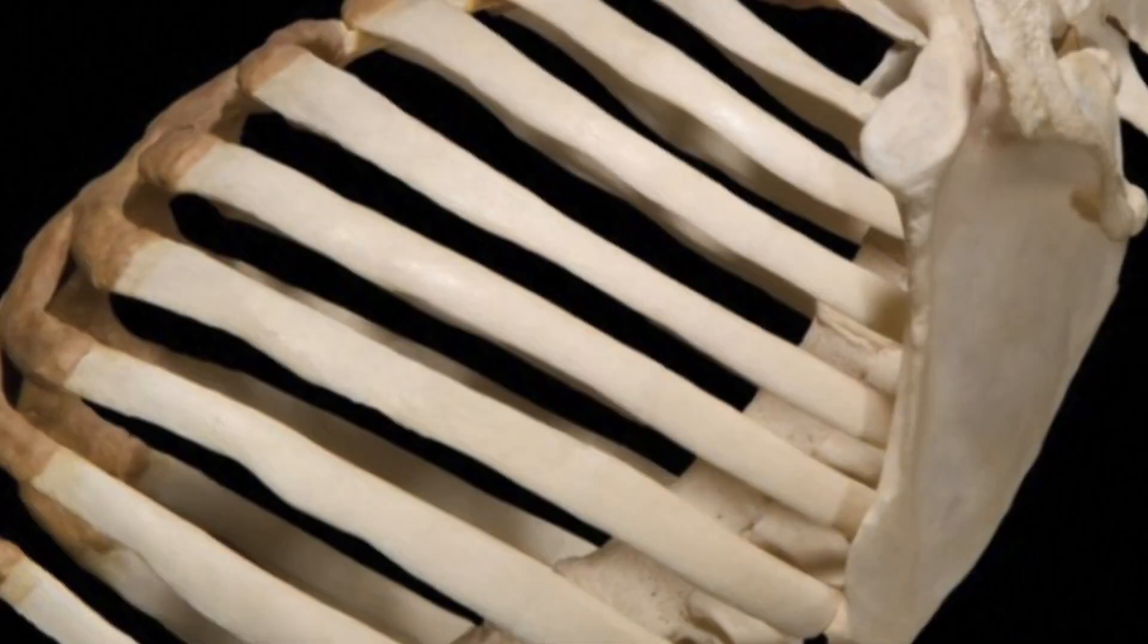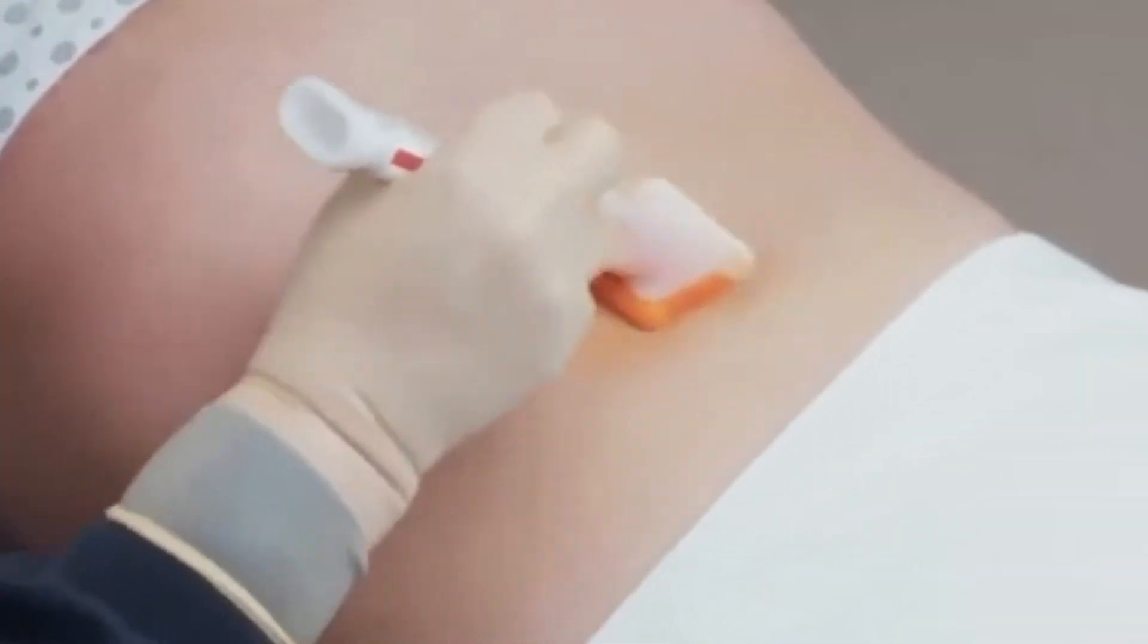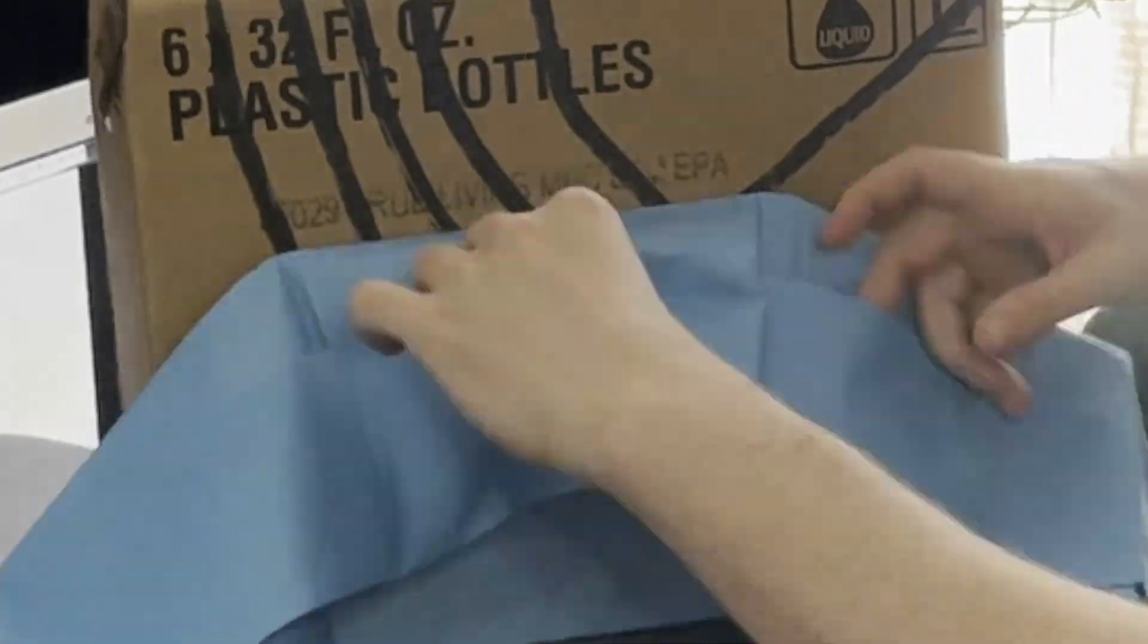Okay, so this model demonstrates the intercostal spaces as well as our target area, which is in the triangle of safety. We have already chloroprepped the patient, which comes in the kit. We've draped it, we've put on our sterile gloves, and we're ready to start the procedure.